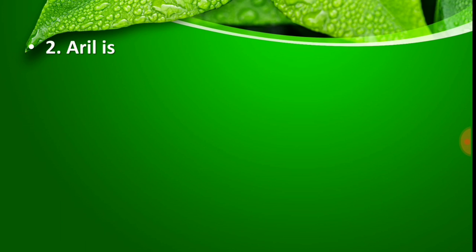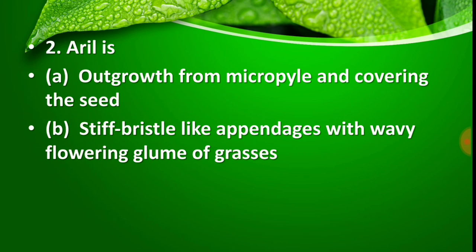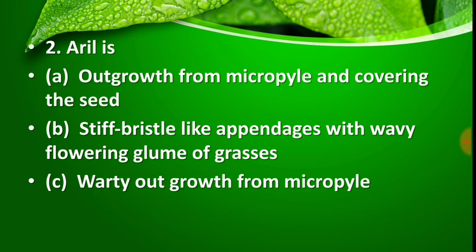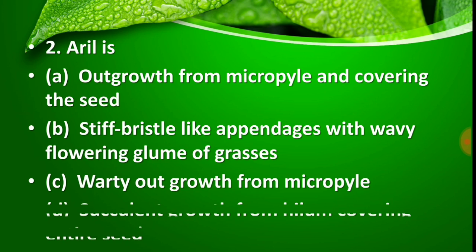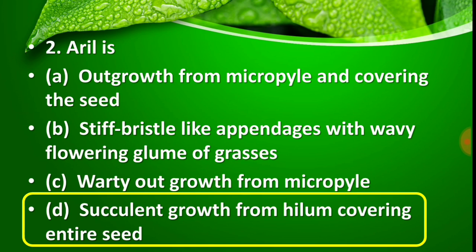Question number 2: Aryl is — Option A: outgrowth from micropyle covering the seed, Option B: stiff bristle-like appearance with wavy flowering glume of grasses, Option C: warty outgrowth from micropyle, Option D: succulent growth from hilum covering entire seed. The right answer is Option D — aryl is a succulent growth from hilum covering the entire seed.